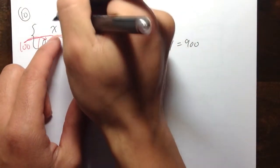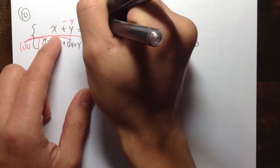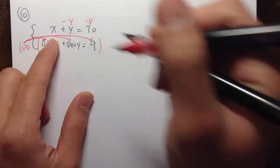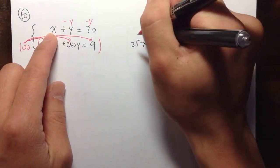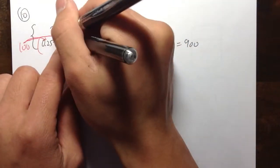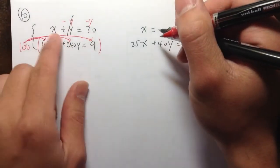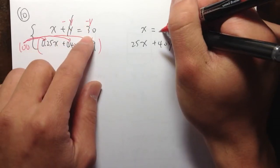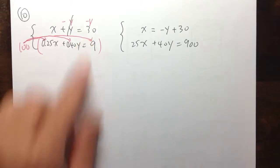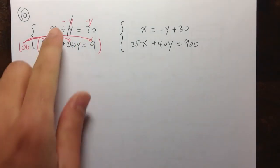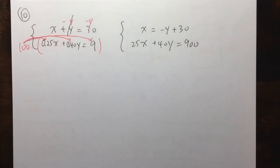So, maybe I can subtract y on both sides. So, on the first equation, I will get x by itself. x is equal to these two cancels. And that's x is equal to negative y plus 30. I just subtract y on both sides for the first equation.